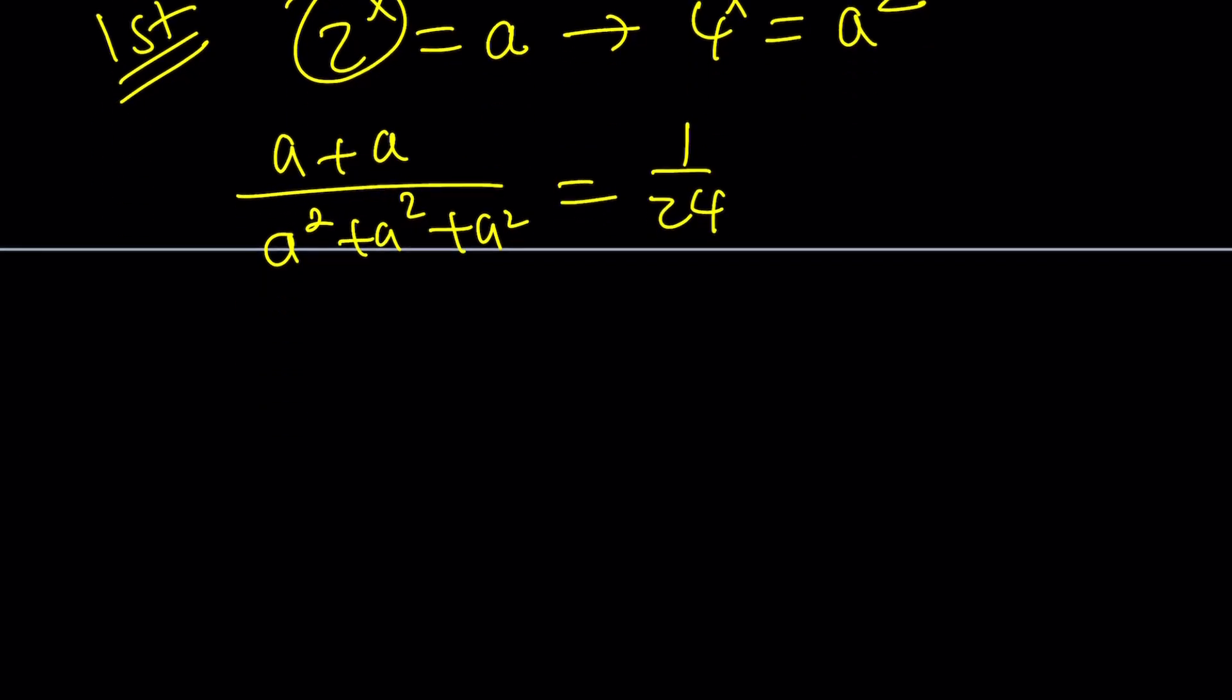Awesome. Now, what is a + a? 2a. What is a² + a² + a²? 3a² = 1/24. Quick question. Can a be 0? The answer is no. You don't want that. So if a is not 0, I can divide by a and simplify this. If I simplify this, what am I getting?